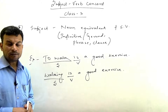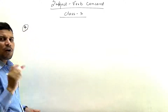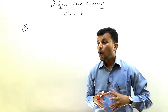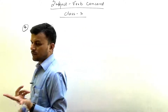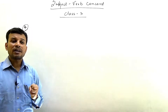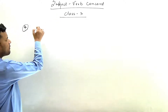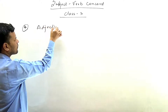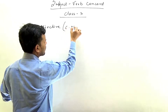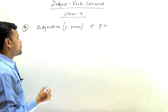Moving to the next rule: when we use an adjective as a noun — listen carefully — when we use an adjective as a noun and add the article 'the' before it, and it conveys the meaning of an entire class of people, then we treat it as a noun (subject), and the verb used with it will be plural.